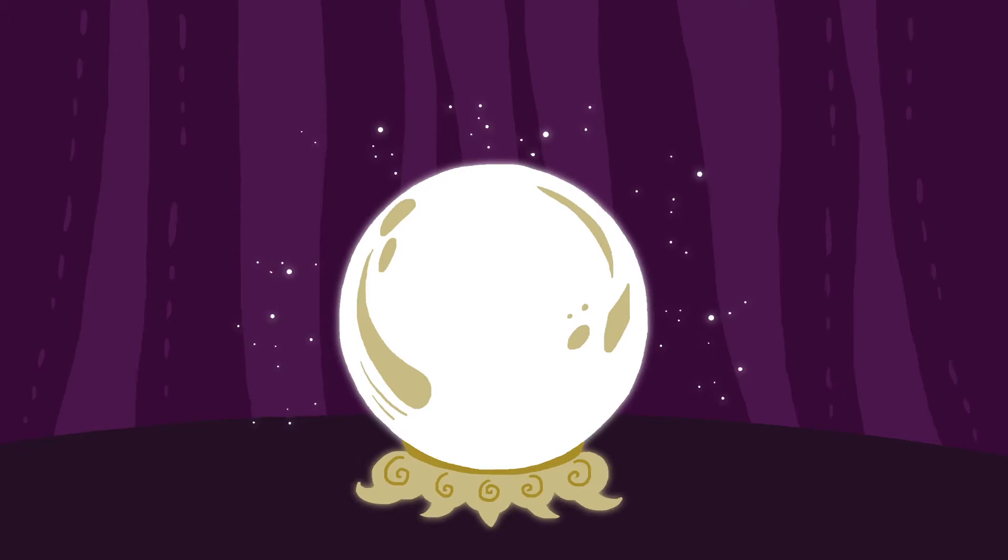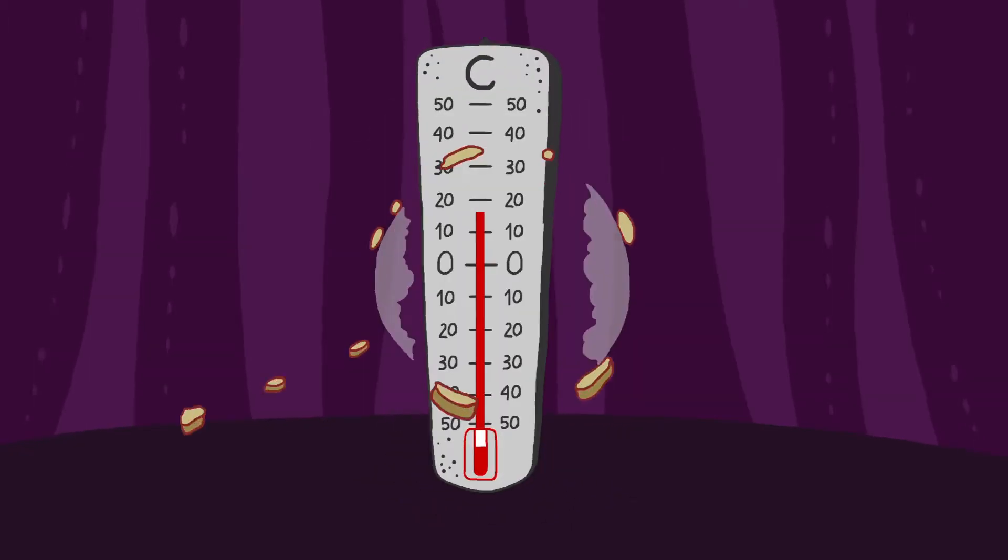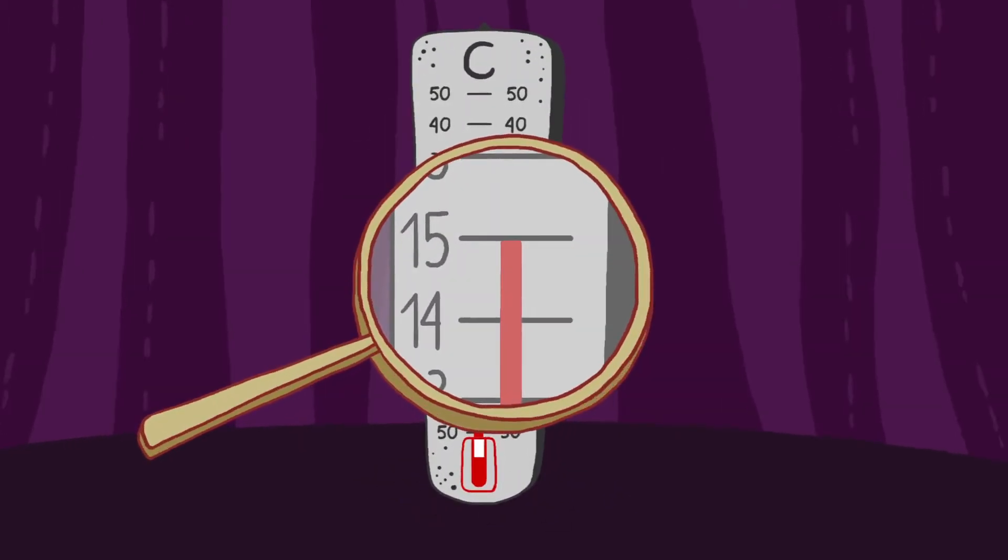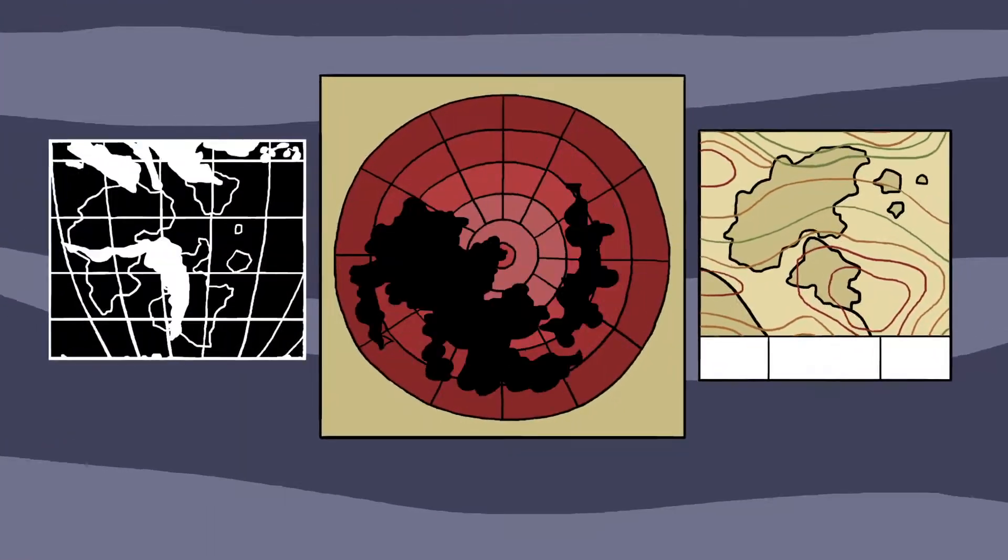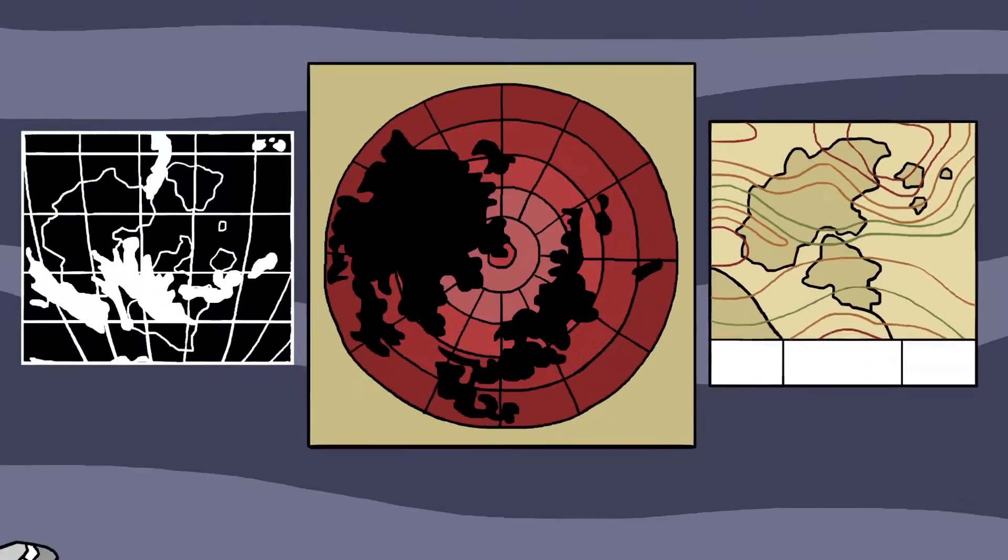However, if we wish to predict the temperature next Saturday to within one degree, then we would need to model a multitude of interacting factors, including air pressure, wind speed and wind direction, as well as all the cloud patterns and precipitation.